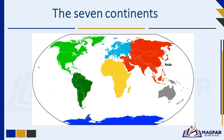Asia is the largest continent, home to diverse cultures. Countries like China, India, Russia, and Japan, and the mighty Himalayan mountains are found in Asia.